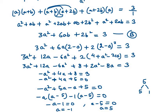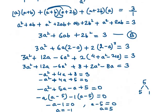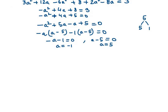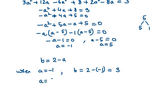We now find the corresponding values of b using b equals 2 minus a. When a equals minus 1, b equals 2 minus (minus 1), so b equals 3. When a equals 5, b equals 2 minus 5, so b equals minus 3. We therefore have two cases: (a equals minus 1, b equals 3) and (a equals 5, b equals minus 3).